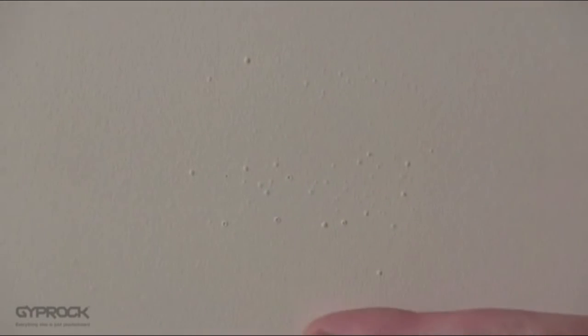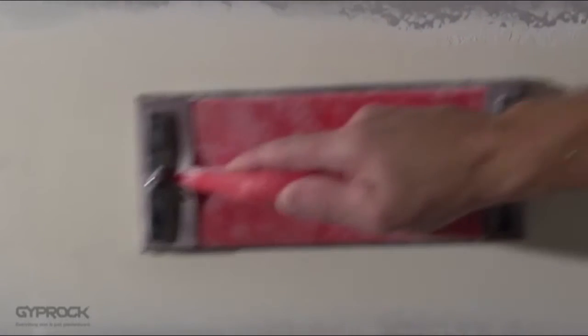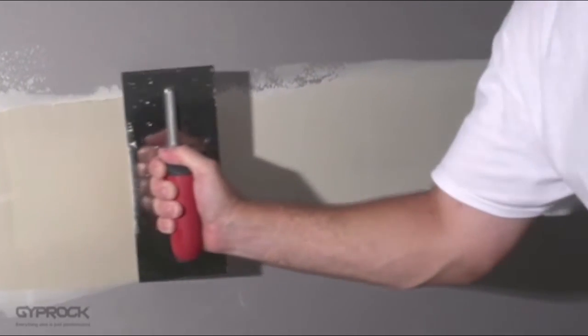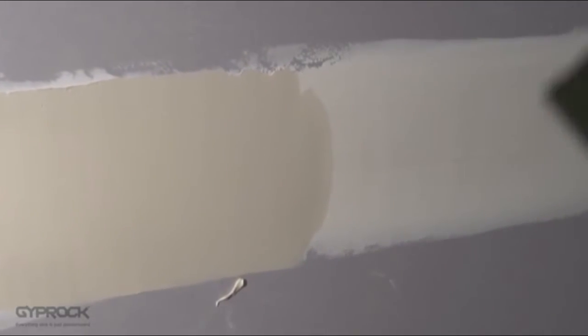The first is called pinholing. Pinholing is tiny air bubbles that form in the set joint, usually when a finish coat has been applied before the previous coats were totally dry. You'll need to sand these and apply another coat of topping compound or all-purpose compound. Once that's dry, sand, dust off, and that joint's finished.